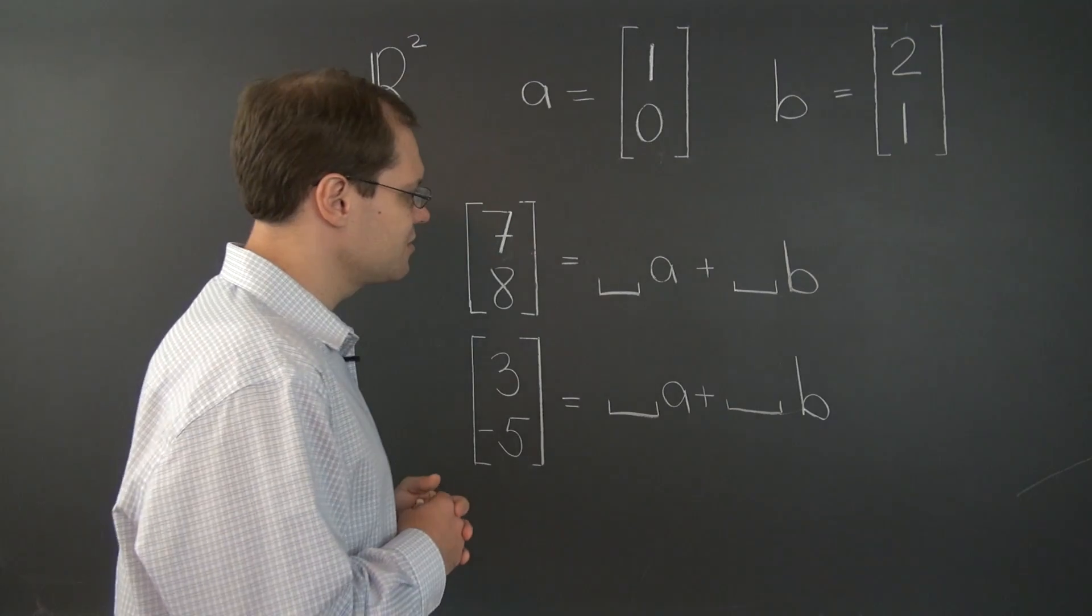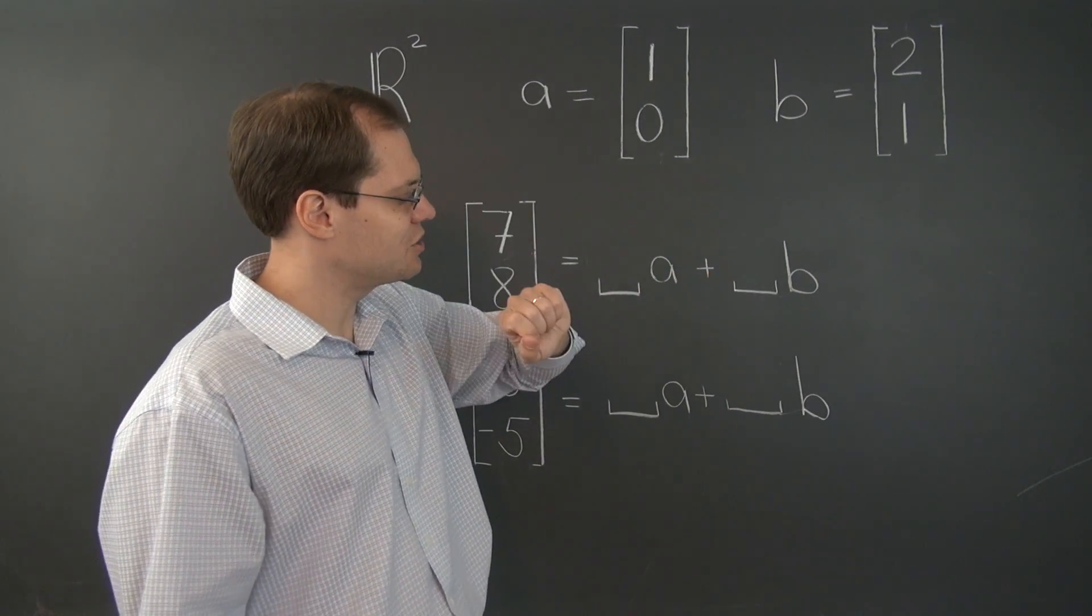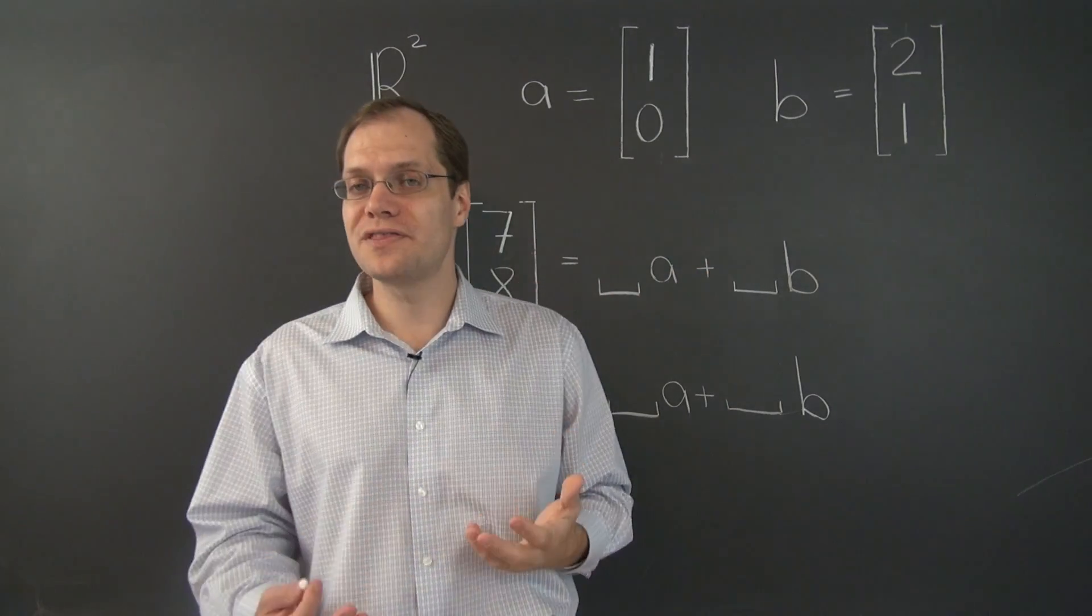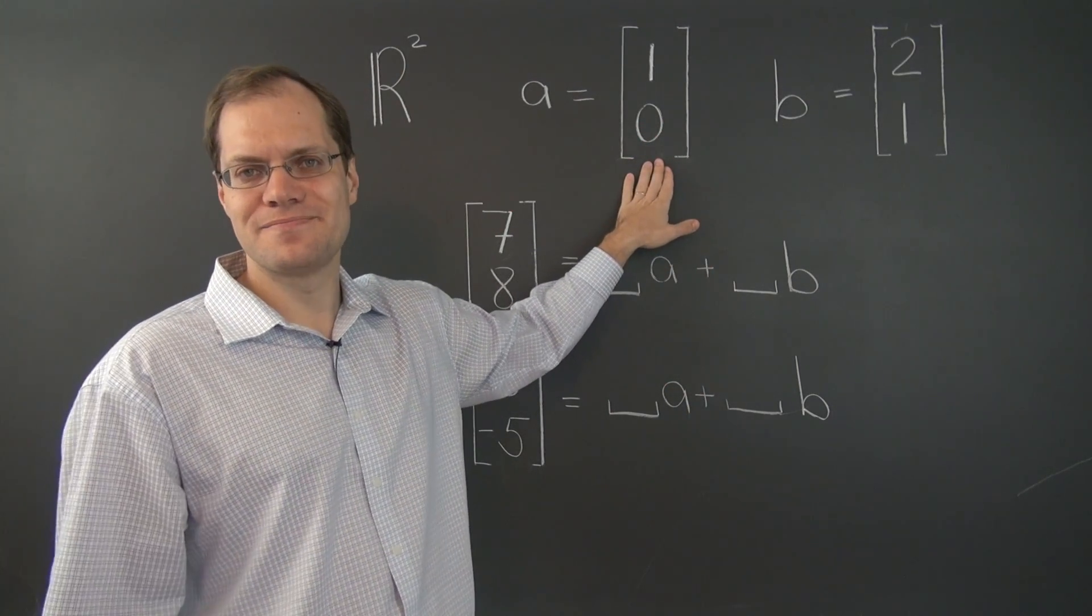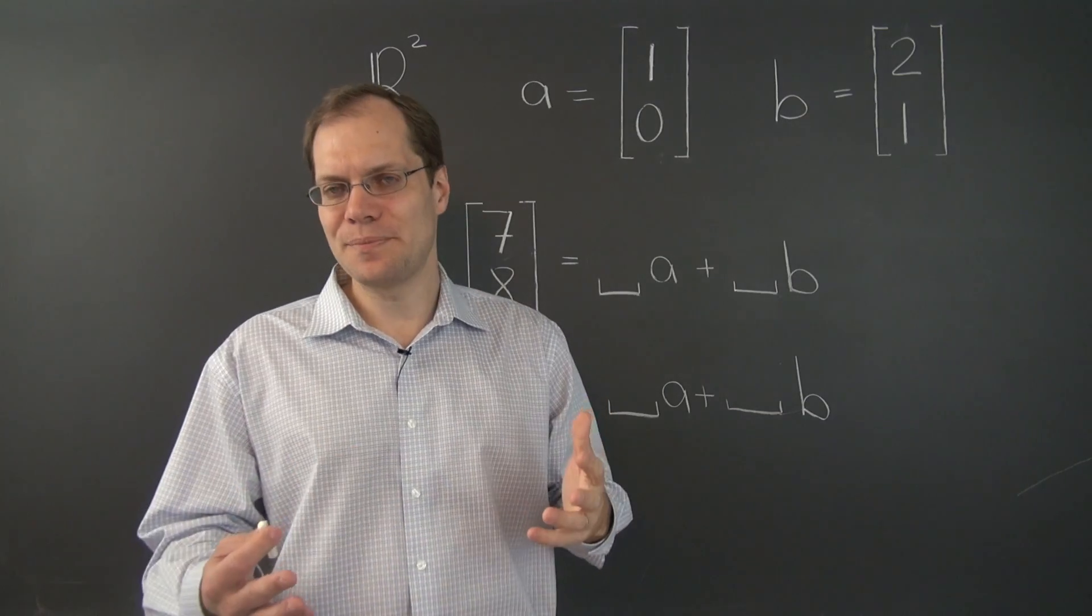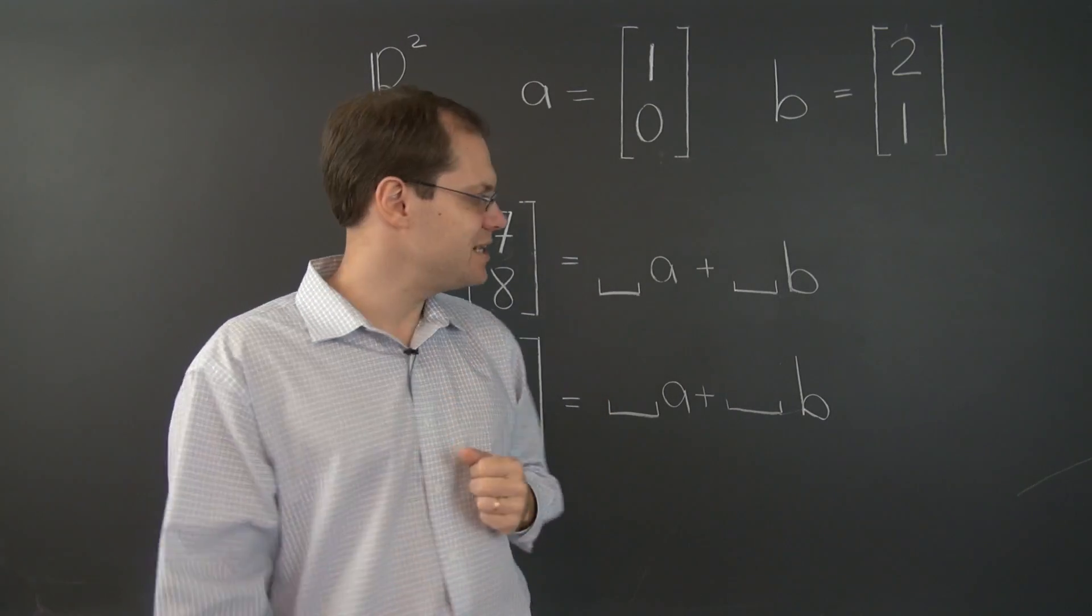So the right strategy is to start with the second coefficient. The rule of thumb is to save the best for last. That's the hard part. The rest is pretty easy.